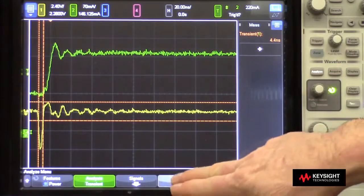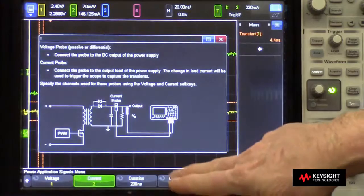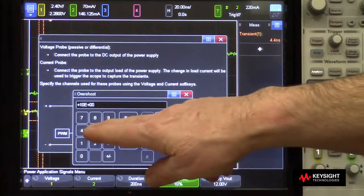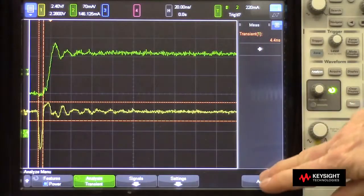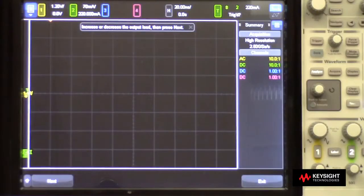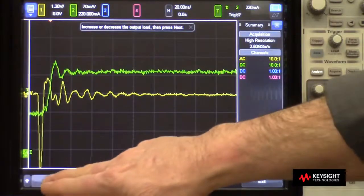Let's now change our measurement criteria to 5% instead of the default 10%. I'll press apply again. I'll change my load. Press next.